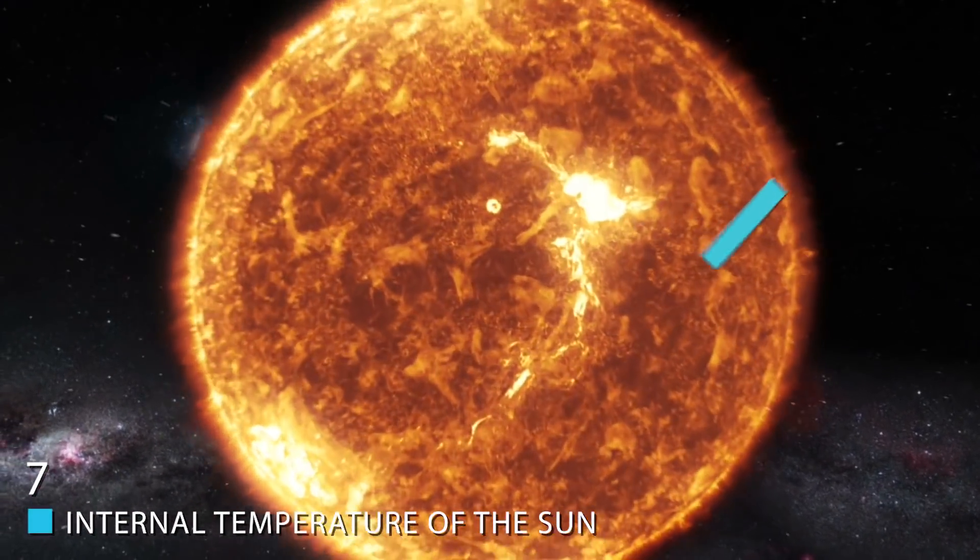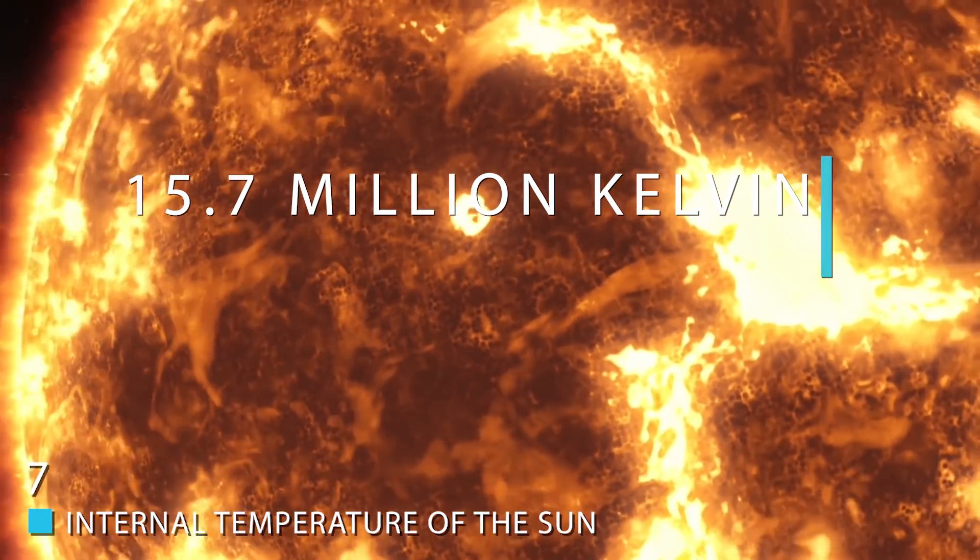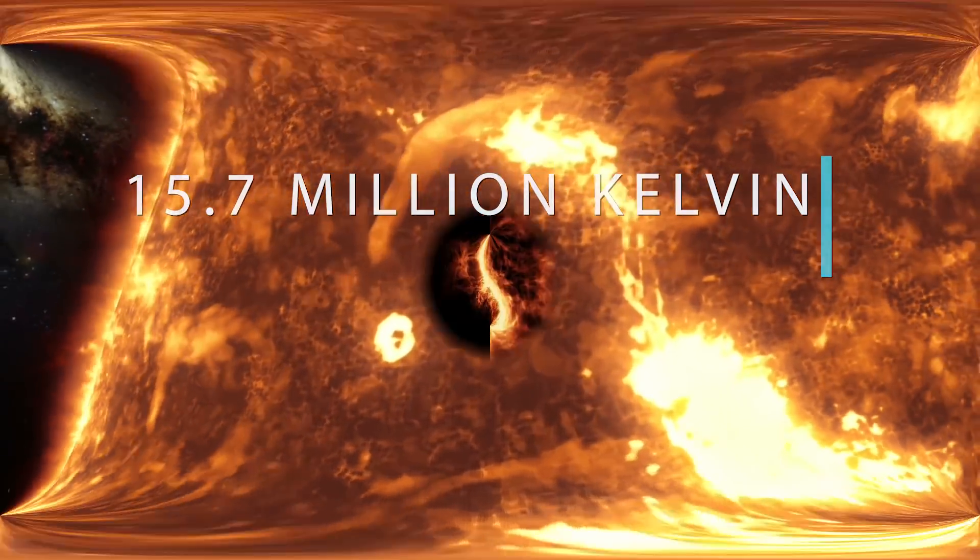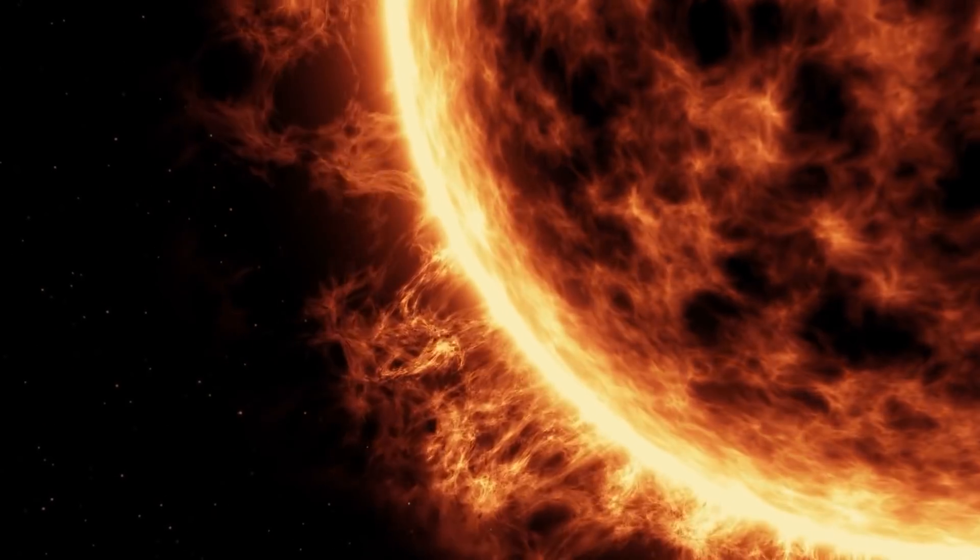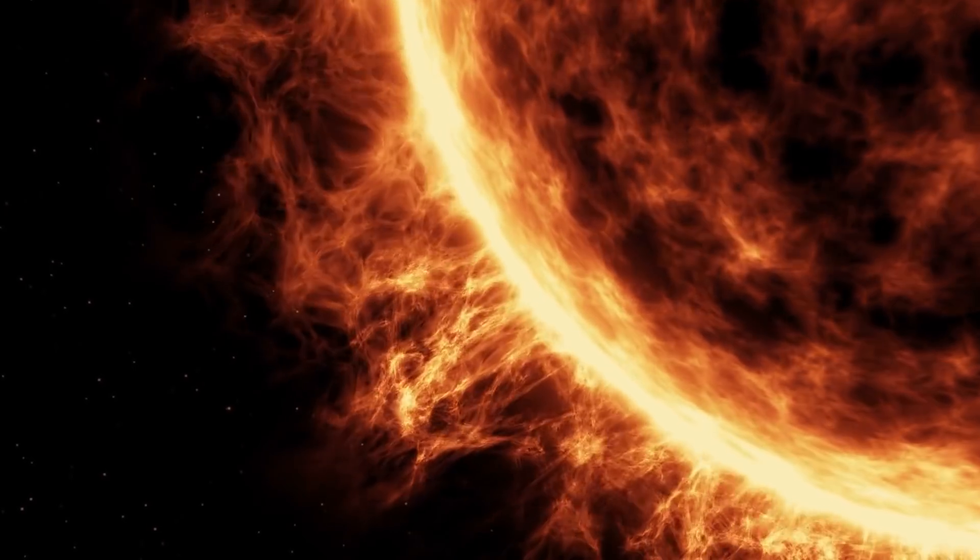The highest temperature in our solar system is the internal temperature of the Sun, which is approximately 15.7 million Kelvin. It's important for you to know this due to the significance of the Sun's role in the evolution of life on our planet.